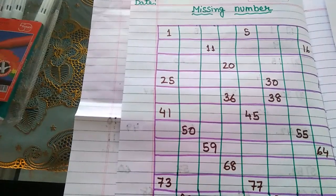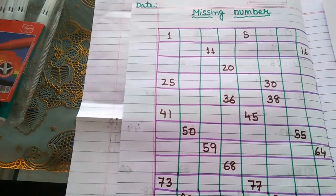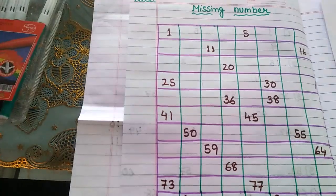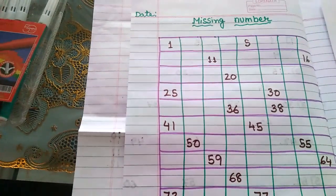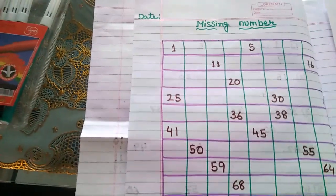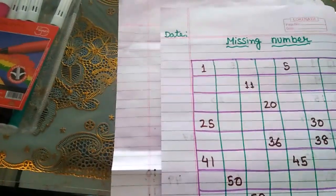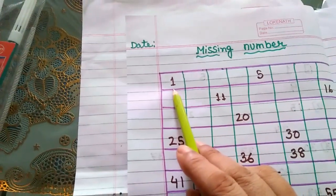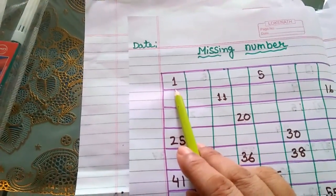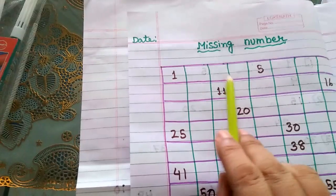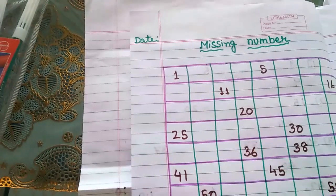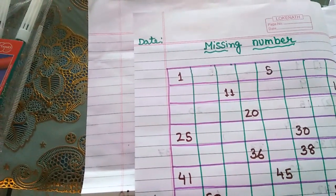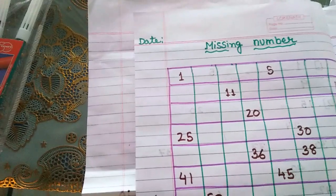Children, are you ready with your pencil? Pencil and color pencil also? Good. See — what is this? One. Iske baad kya hai? There is no number, number is missing. So we have to count and write.